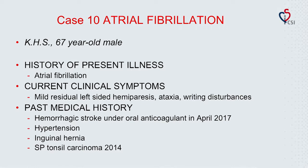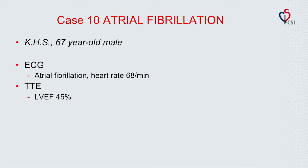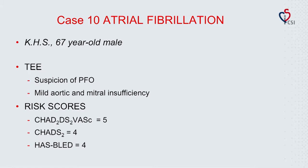Thank you, Professor Sievert. The next case is a 67-year-old male with atrial fibrillation. The patient suffered hemorrhagic stroke under oral anticoagulants in April 2017. He still has mild residual left-sided hemiparesis with ataxia and writing disturbances. Other relevant past medical history includes hypertension, inguinal hernia, and tonsil carcinoma. ECG showed atrial fibrillation with a heart rate of 68 beats per minute. TTE showed reduced ejection fraction. TEE presented a suspicion of PFO, and mild aortic and mitral insufficiency.